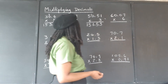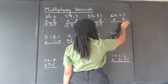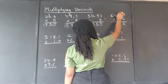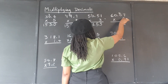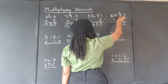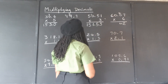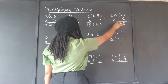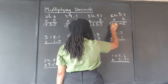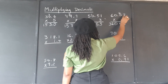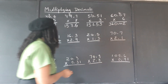60.07 times 6. 6 times 7 is 42 — write the 2, carry the 4. 6 times 0 is 0, plus 4 is 4. 6 times 0 is 0. And 6 times 6 is 36. There are two decimal places at the top, so we put back one, two decimal places in the answer.